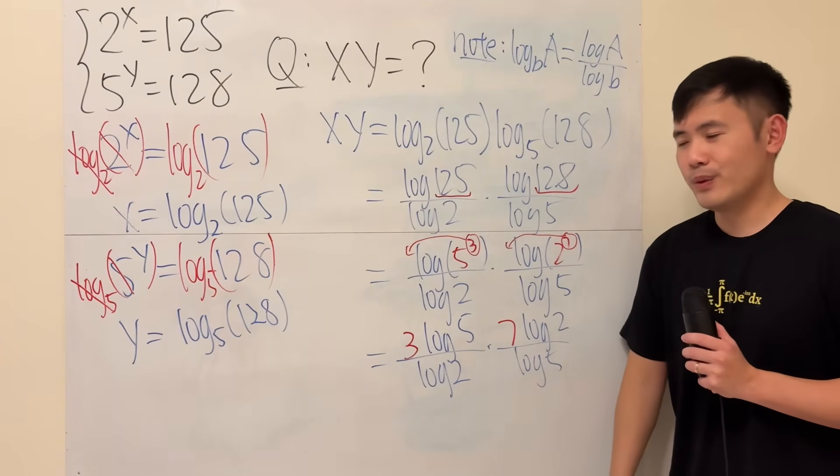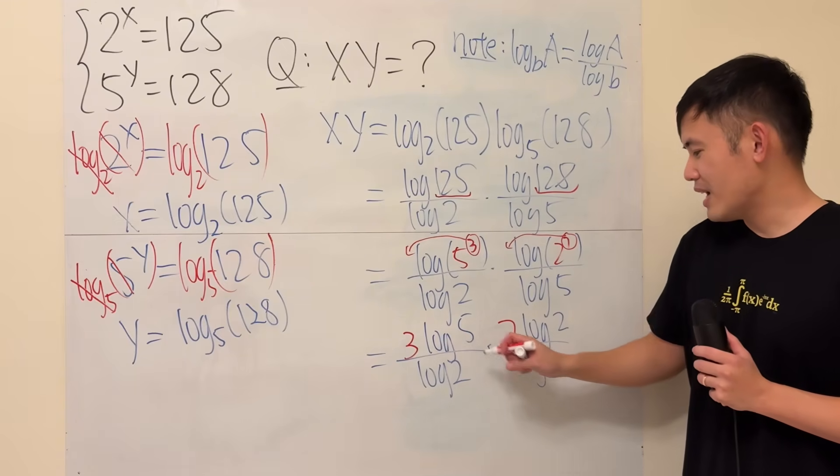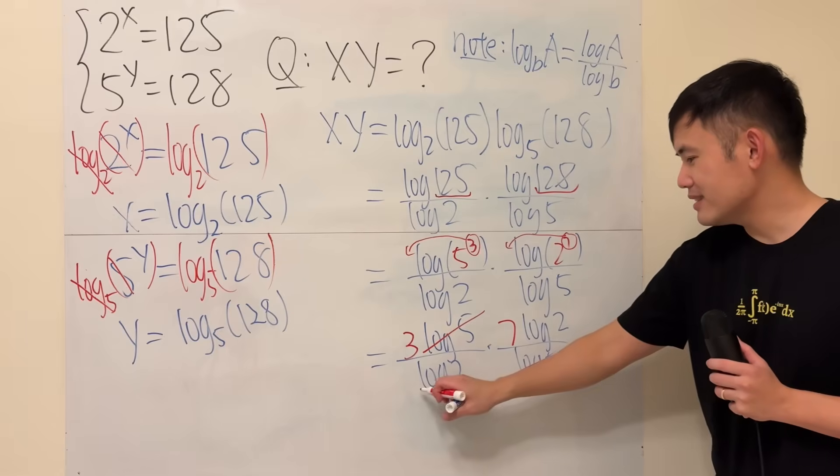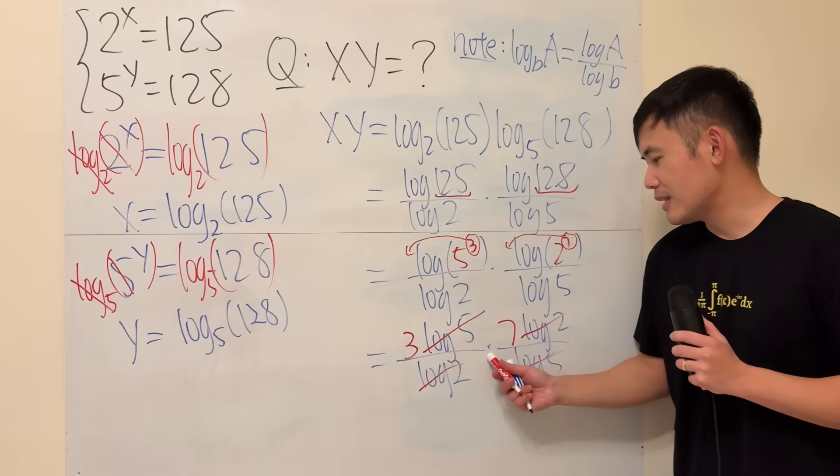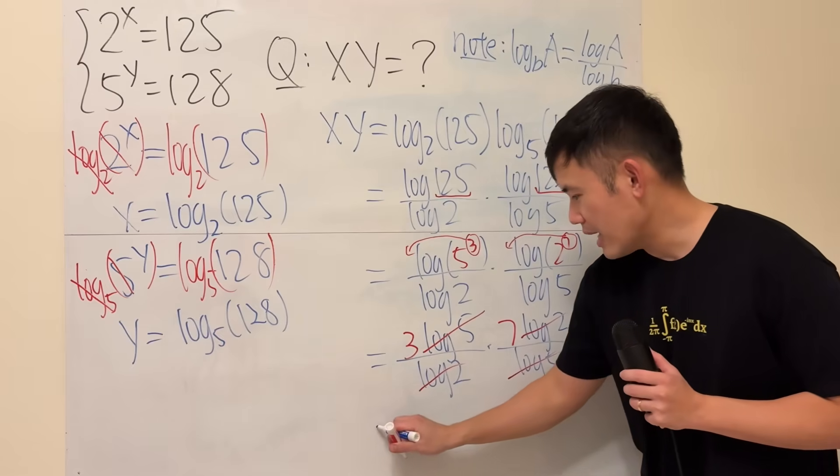And now, what's happening? Well, this is log 5, and this is log 5, they cancel. Likewise, this and that can cancel. So at the end, we just have to do 3 times 7, and of course, that is 21.